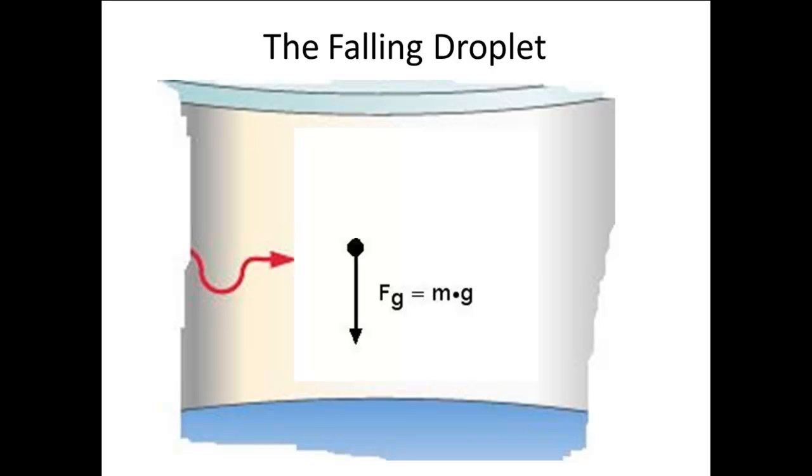This is called a terminal velocity, and happens for any object falling through air, because air resistance produces a force that acts in the opposite direction of the motion. The force of air resistance depends on the surface area of the drop. If we assume the drop is spherical, then the surface area is related to the volume of the drop. From the volume of the drop and the density of the oil, we can get the mass of the drop, and then the charge on the drop.